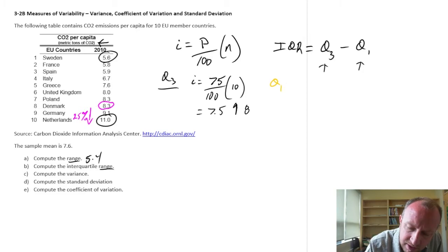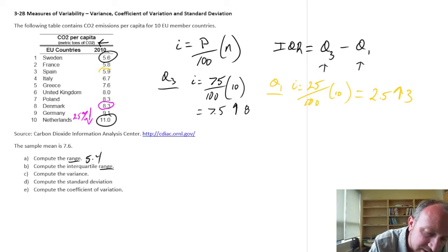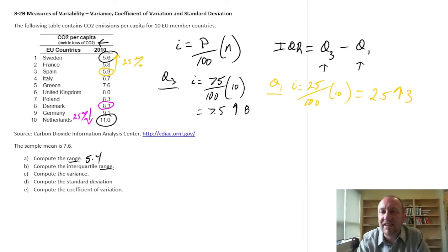Let's look at Q1. Our index, we're looking at the 25th percentile times 10, and so that's going to equal 2.5. We round that up to 3. So here's our first quartile, which means that 25% of the observations are less than or equal to 5.9.